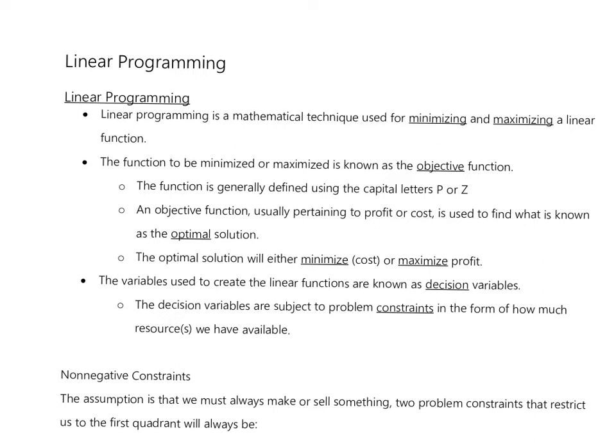In order to do that, we look at what's called the objective function. The objective function is written as a variable — a function that includes both the variables of interest. We define the objective as P or Z, where P stands for profit. It usually pertains to profit or cost, and we want to find what's called the optimal solution, which will either maximize or minimize those particular things.